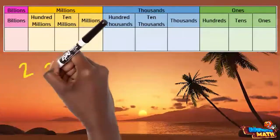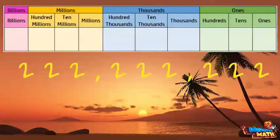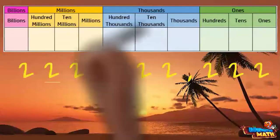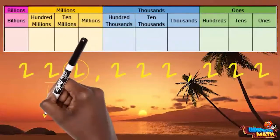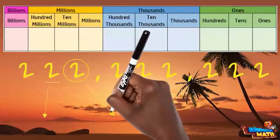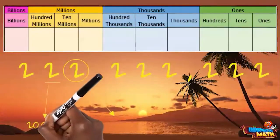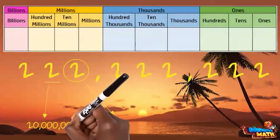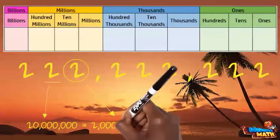Look at the number shown: 222,222,222. The digit in the 10 millions place is underlined. It has a value of 20 million. And the digit in the millions place is circled. It has a value of 2 million.